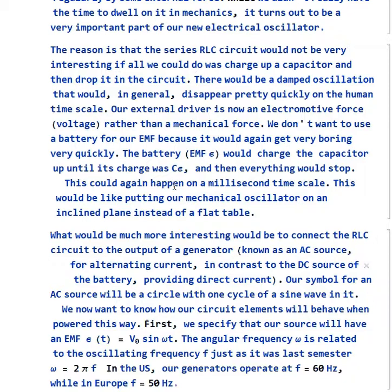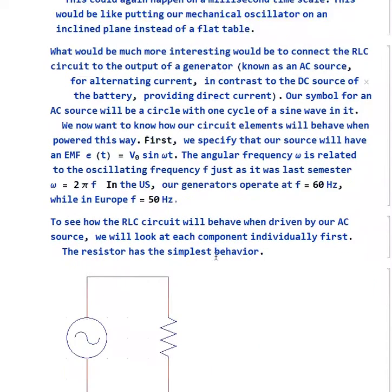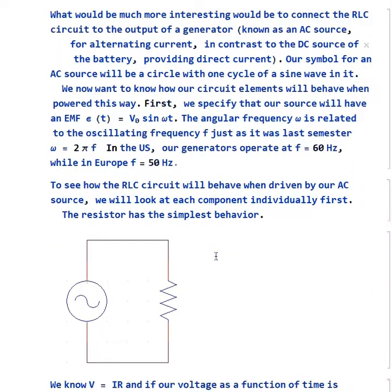This may take a millisecond. So this is kind of like putting our mechanical oscillator on an inclined plane instead of a flat table. It doesn't really change things in an interesting way. Now, what would be more interesting is if we take the RLC circuit and connect it to the output of a generator, which is an AC source, where AC stands for alternating current. The battery is DC, or direct current. Our symbol for an AC source is going to be a circle with a sine wave, one cycle of a sine wave in it. And we want to know how our circuit elements will behave when we power them like this.